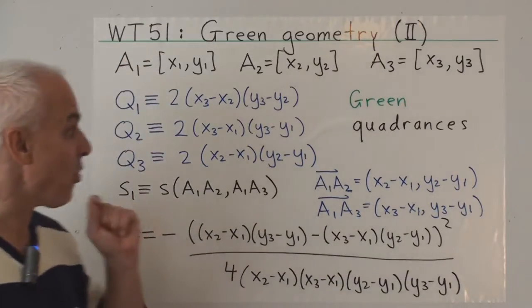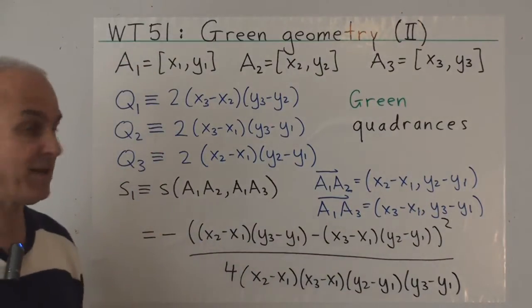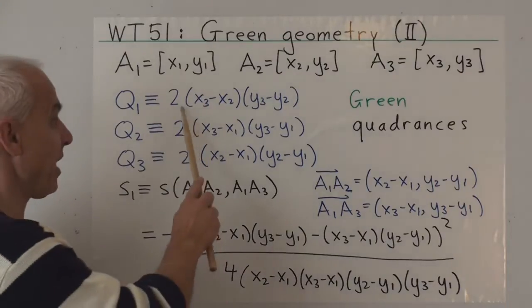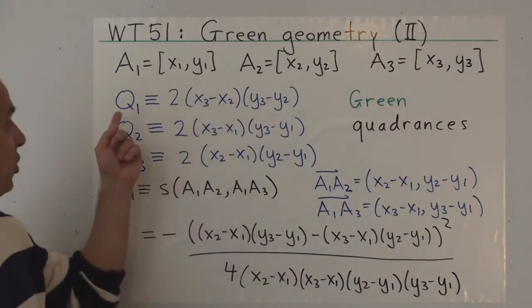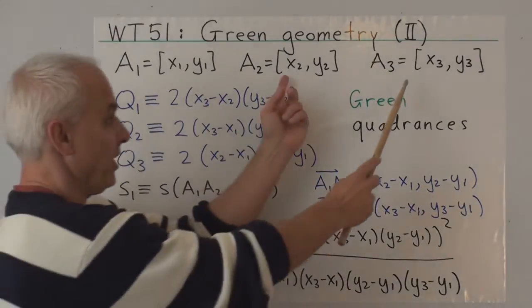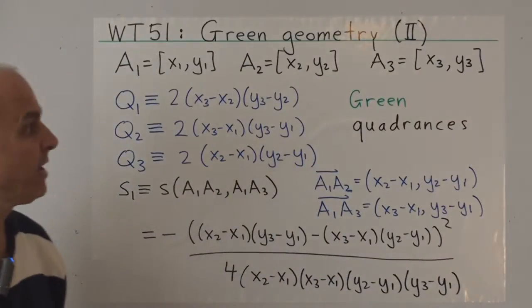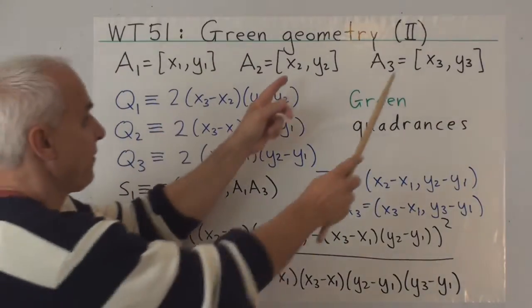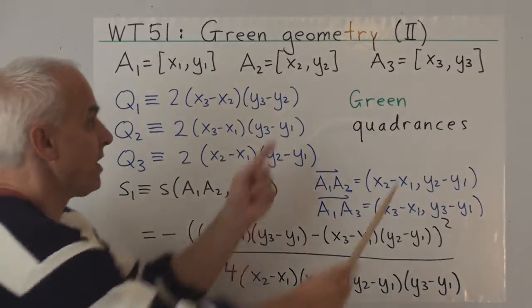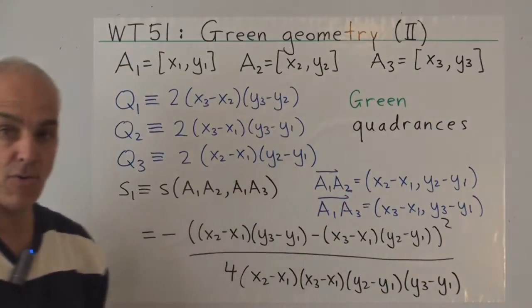So let me remind you that the quadrance between points in the green setting is defined by an expression like this. So Q1, the quadrance between A2 and A3, is two times the difference in the X-coordinates times the difference in the Y-coordinates.